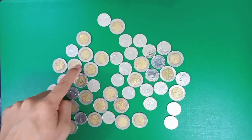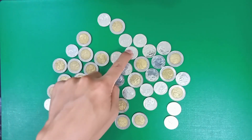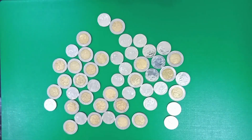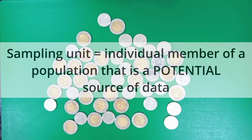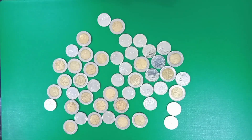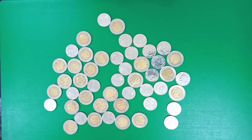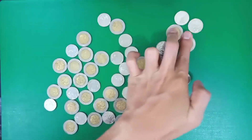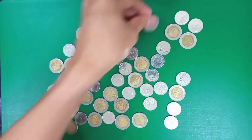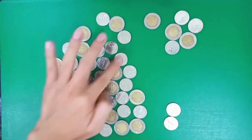Each of these big dots and small silvers will then be our sampling unit. A sampling unit is defined as the individual member of a population that is a potential source of data for our research. Let's say the calculated sample size for our study is 10, and using proper sampling methods, we were able to select these 10 sampling units from our sampling frame.